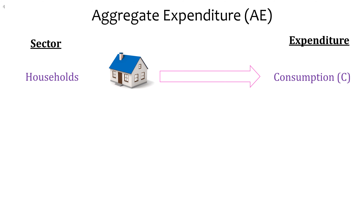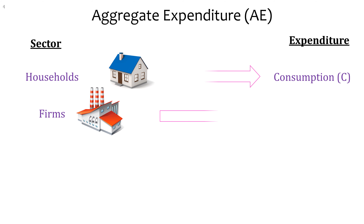Who else spends money other than households? Companies — called firms. They also spend money, and the name for their spending is called investment. In economics, investment is a special term, different from its everyday sense, and it is always associated with firms. You might want to highlight that investment always goes with firms.